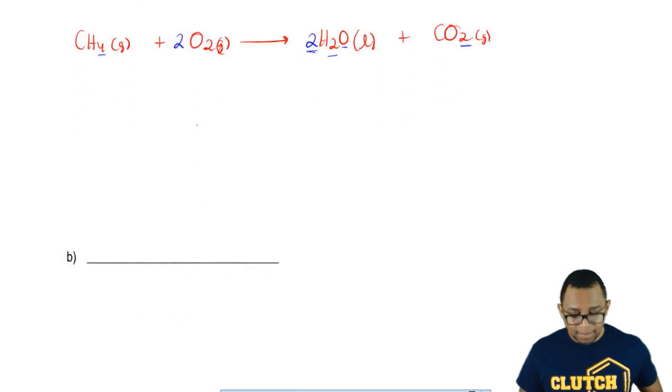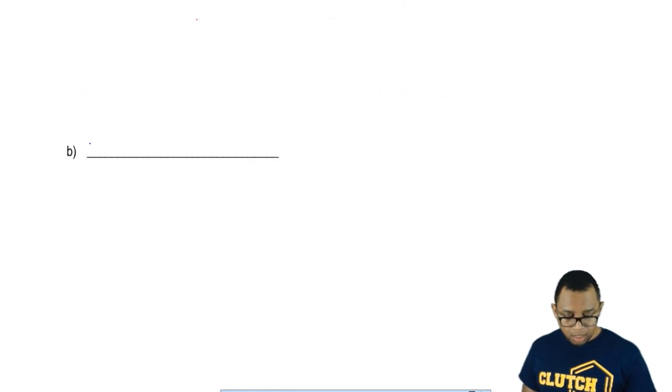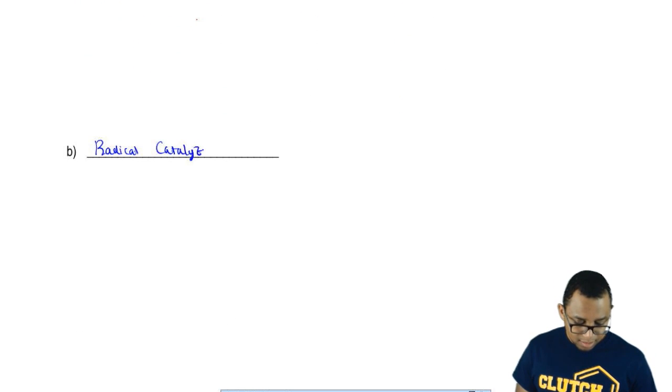The new one that's connected to organic chemistry, it's called radical catalyzed halogenation. What in the world does that mean?